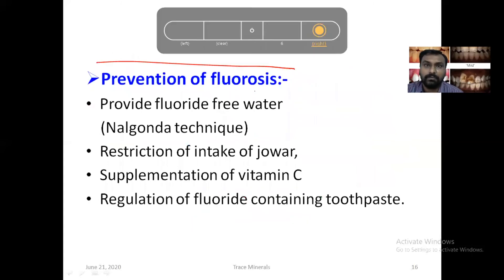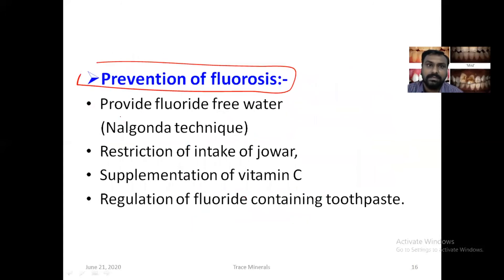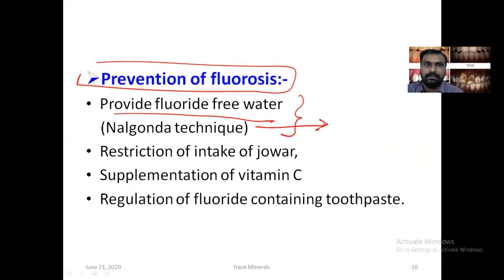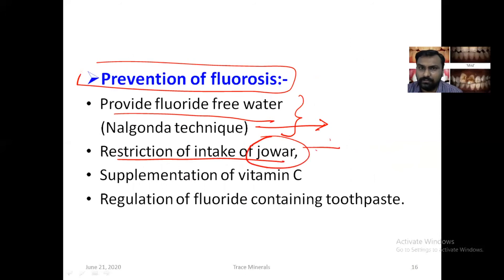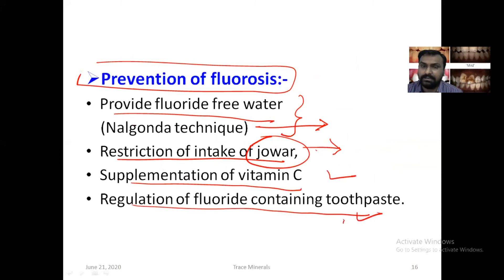To prevent dental and skeletal fluorosis, we can provide fluoride-free water using a technique called the Nalgonda technique. Restriction of jowar intake is also important, as jowar contains a good amount of fluoride. Supplementation of vitamin C will be helpful, and regulation of fluoride-containing toothpaste is recommended. Drinking water can also be treated using the Nalgonda technique.